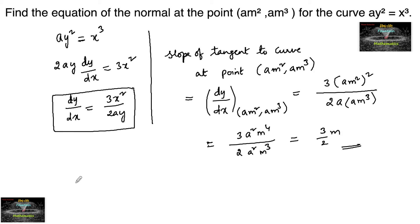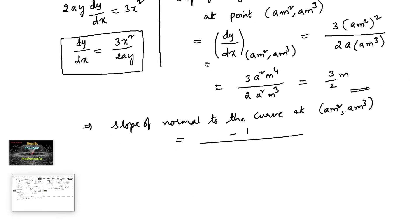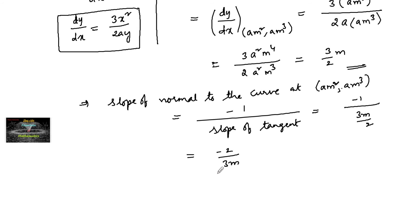So the slope of the tangent is 3m/2. This implies the slope of the normal to the curve at (am², am³) is minus one upon the slope of tangent, that is −1 / (3m/2), which gives us −2 / (3m). So this is the slope of the normal.